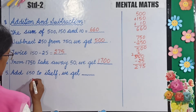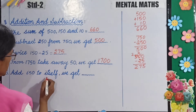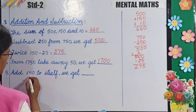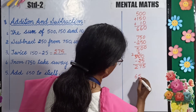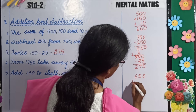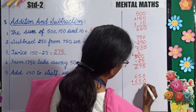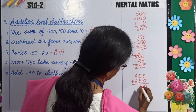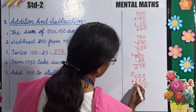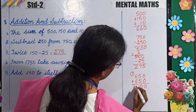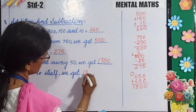Add 650 to itself — we get? Itself means you will add 650 two times, so 650 plus 650. 0 plus 0 is 0, 5 plus 5 is 10, write 0 and carry over, 6 plus 6 is 12 plus 1 is 13. So your answer is 1300.